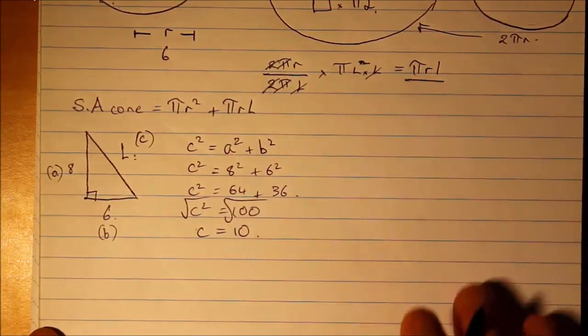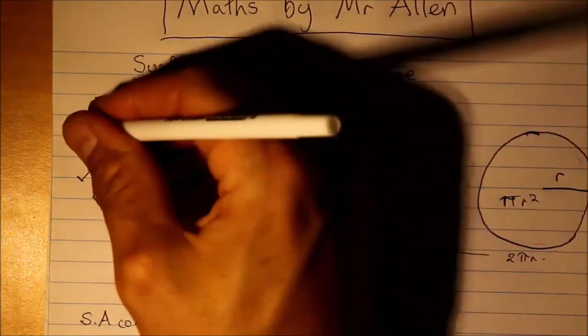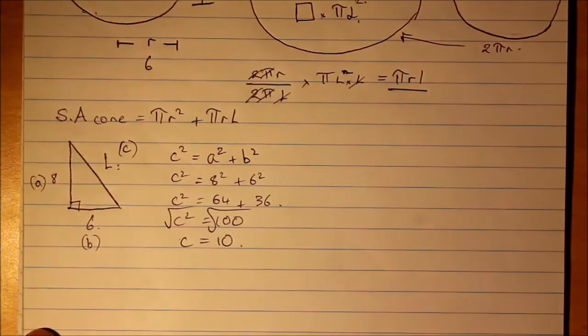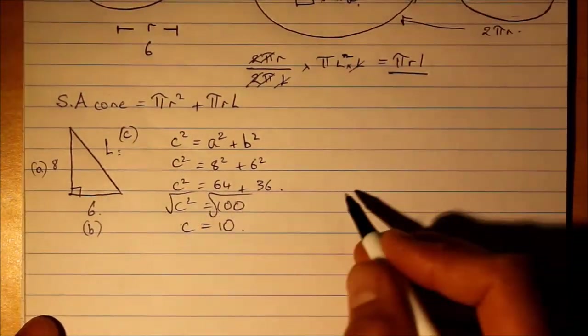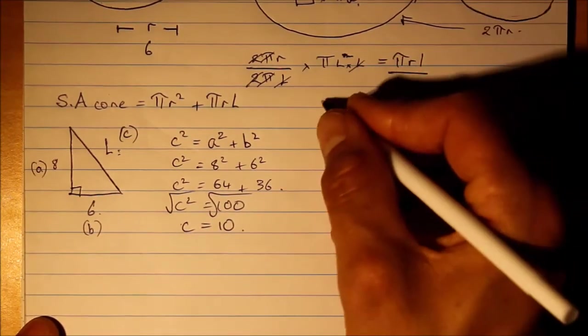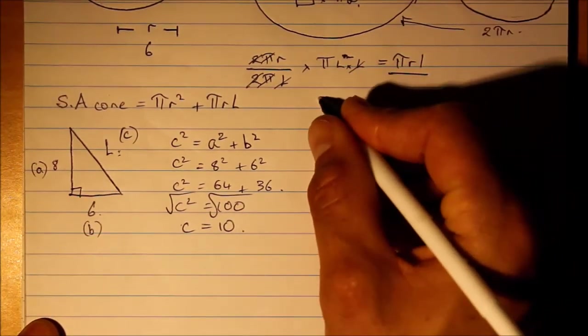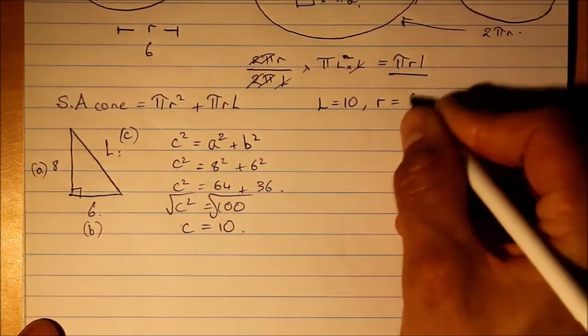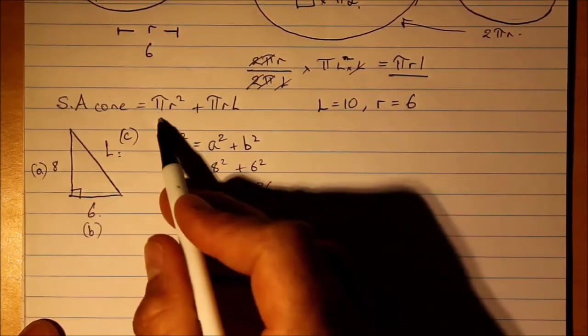So this slant height now is 10, which is just what we need to solve our problem. So we can write down what we know: slant height equals 10, r equals 6, and that's all we need.